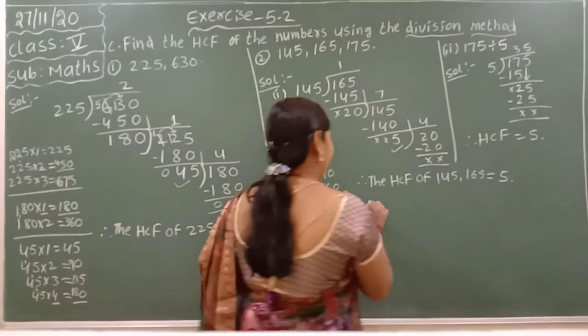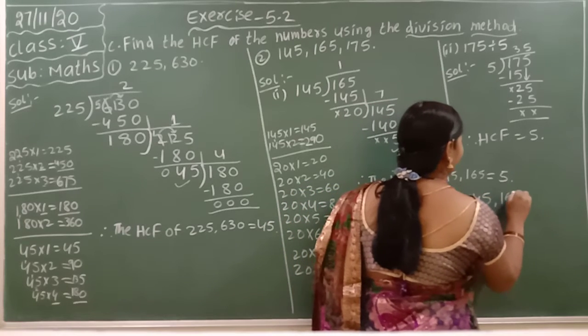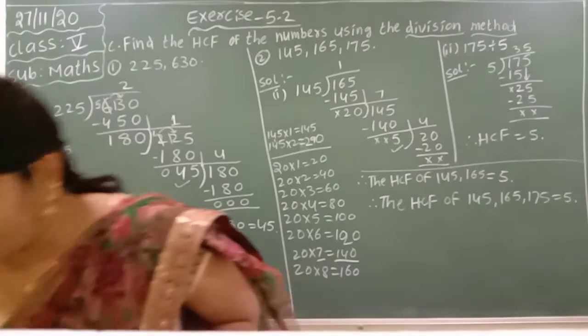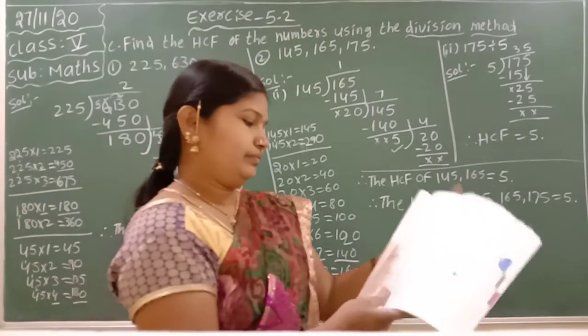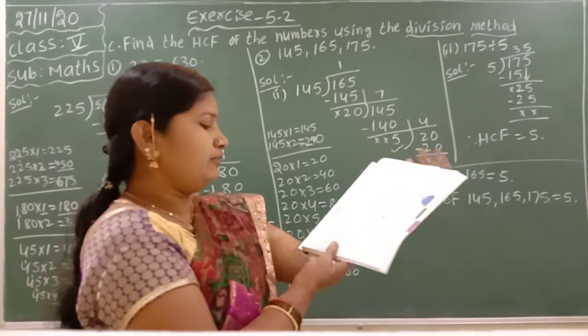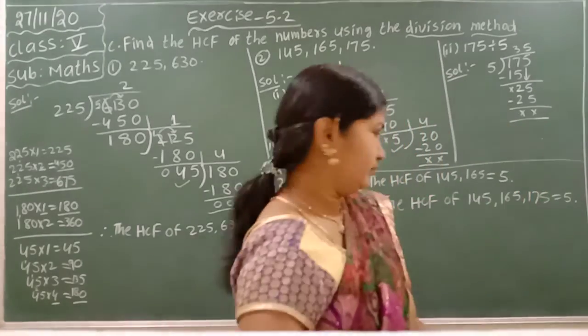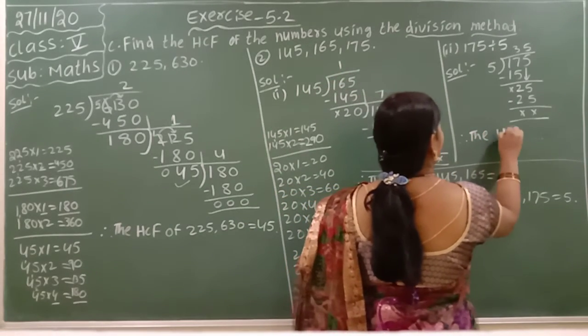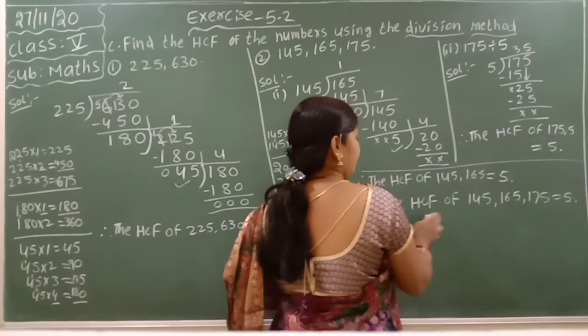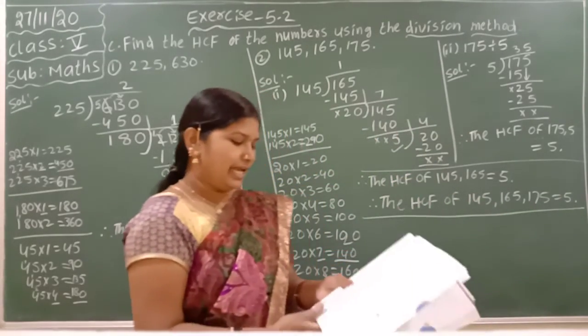Now you can write: Therefore, the HCF of 145 comma 165 comma 175 is equal to 5. Like this, in your textbook page number 99, you can see this.